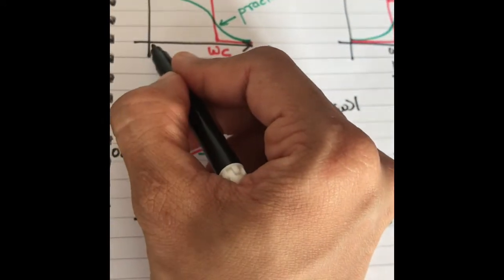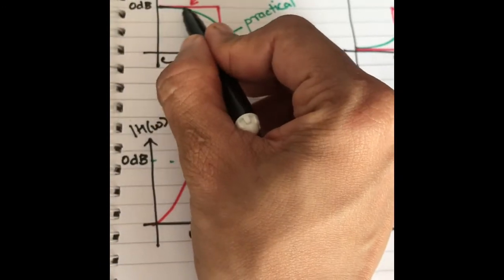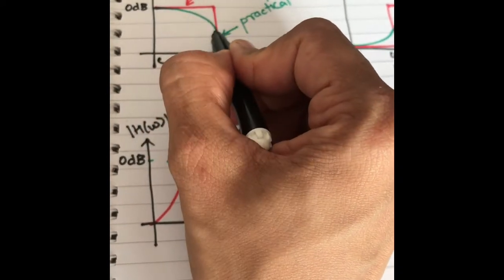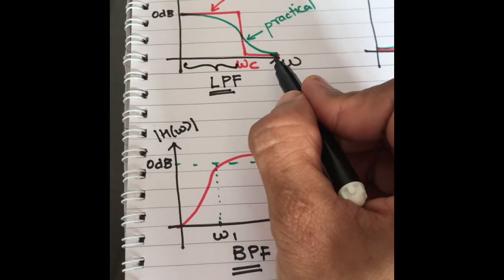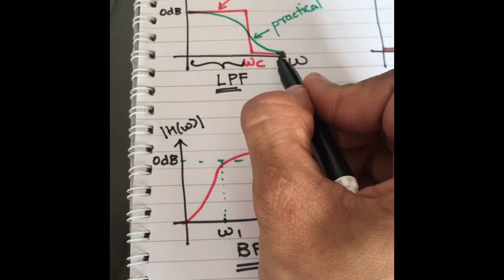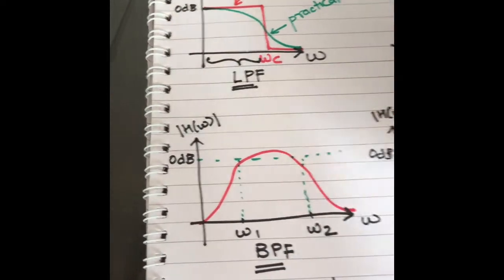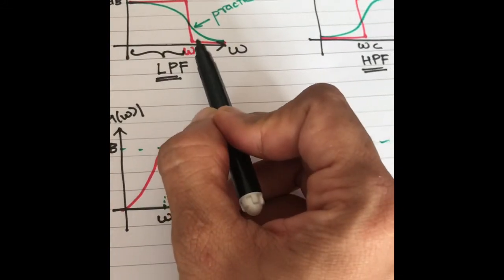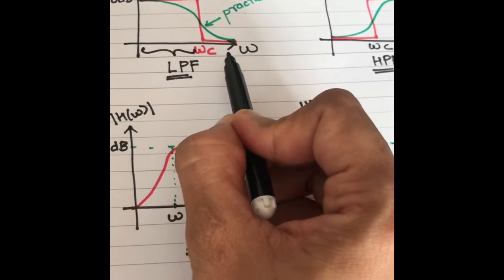For frequencies less than omega c, the gain is 0 dB — ideally and also practically, it is almost 0 dB. But beyond the cutoff frequency, the gain drops to zero. This is a low pass filter: it passes all frequencies below the cutoff frequency and highly attenuates frequencies above the cutoff frequency.